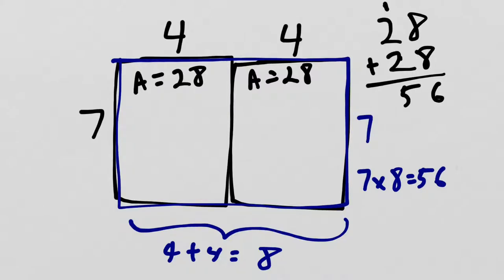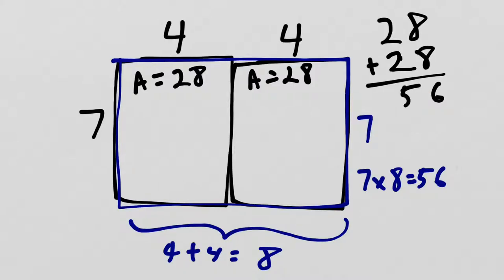In math, things always fit together like this. And if you do something and find that it doesn't fit together, then you know you've made a mistake. For example, if I had forgotten to carry the 1 and just said 8 plus 8 is 16 — there's a 6, and 2 plus 2 is 4 — I'd get 46, which is incorrect. And you'll notice it does not match 56, which is 7 times 8. That tells me that somewhere there's a mistake. So it's really important to always make sure that your work matches up.